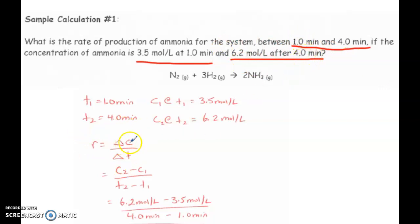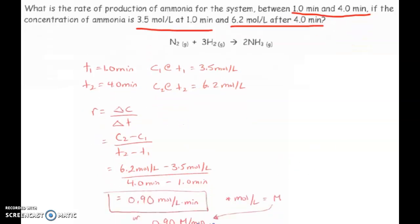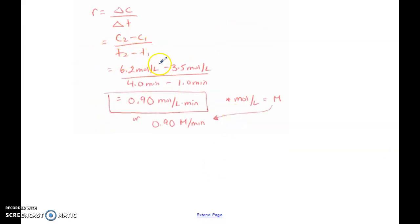So essentially, you're doing change in concentration over change in time. It's essentially you're just plugging in the values. So change in anything, if you recall from what we've been doing so far in this unit, is always your final minus initial. So change in concentration, you're going to do your second concentration minus your first. So 6.2 minus 3.5. When you are looking at your change in time, same thing, final minus initial. And you're going to divide the two out.